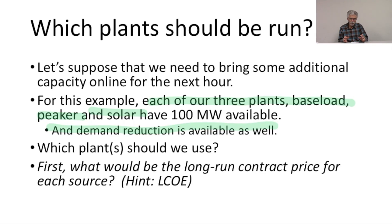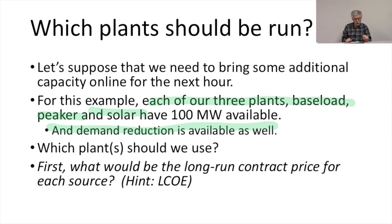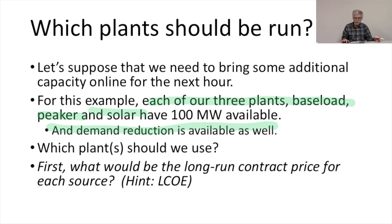Each of them have 100 megawatts available, and we have demand reduction available as well. So the question is, if we need to expand our current generation, what would be the long-term contract price for each of these sources? The long-term contract price for each of these sources is the levelized cost of energy.